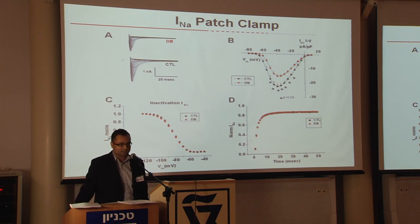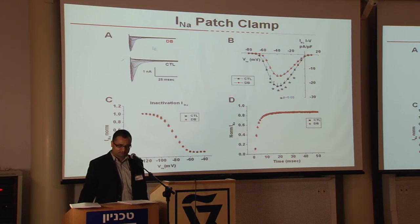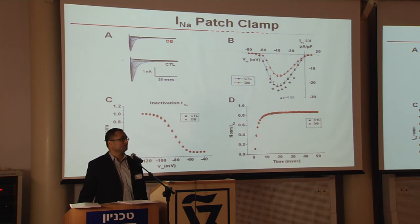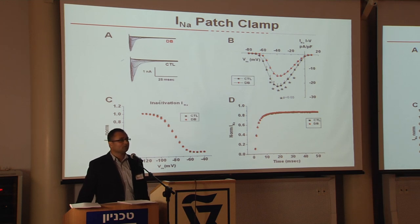The next question was: what is the ionic basis of this slow conduction? We looked at the sodium current, which is the major current responsible for action potential excitation and propagation. Using patch clamp techniques, we recorded the sodium current in control cells versus diabetic cells. On the y-axis is current in nanoamperes and x-axis is milliseconds. The amplitude of the sodium current is reduced in diabetic ventricular myocytes — the sodium current density is about 35% smaller in diabetic ventricular cells compared to controls.